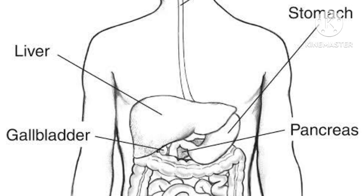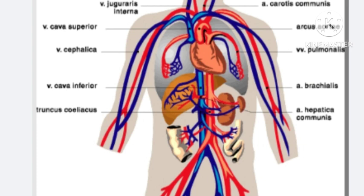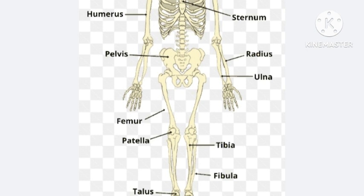The next topic is model-based projects. You have to make one model — the options are: first, the digestive system and how it works; second, the urinary system; third, the circulatory system, showing how blood circulates in the body and its functions; and fourth, the skeleton system. These are your EVS project topics. You can choose any one and make your project. Thank you.